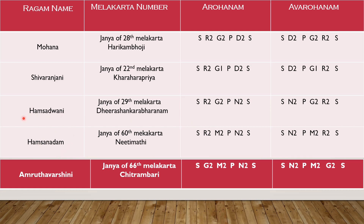Next ragam is Hamsanadham. From Hamsadvani ragam, if you remove Antara Gandharam and place Pratimadhyamam, the rest of the notes remain the same. Ri will be the same — instead of Ga we are placing Ma. Sarima panisa saani pamarisa — remove Ga and place Ma, that is Hamsanadham, Janya of the 60th Melakarta Neetimati.